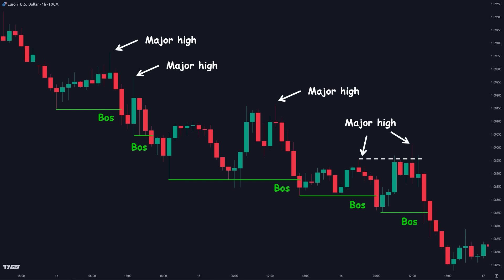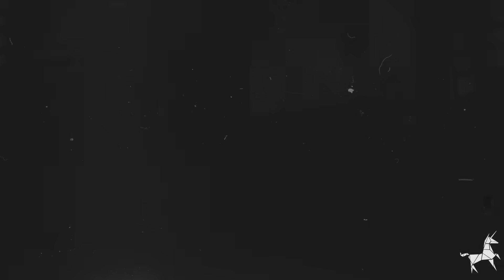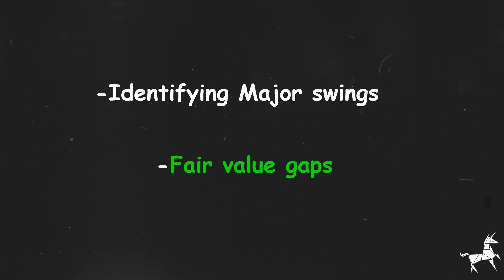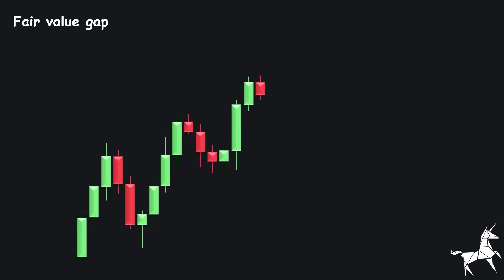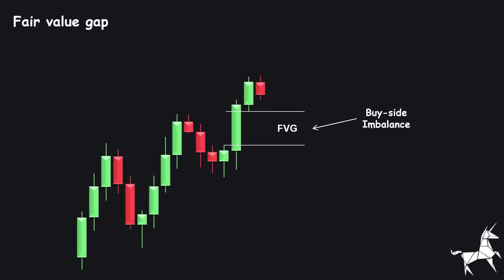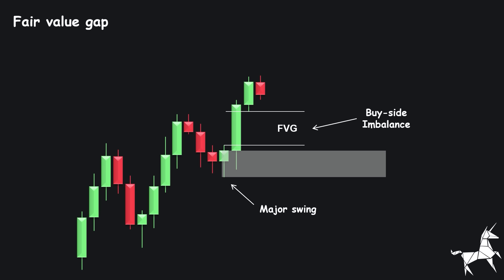This was the first criterion for identifying a major swing: the origin of a break of structure. There are two more criteria that help us identify major swings and confirm the market direction. A bullish fair value gap indicates a buy-side imbalance, where buying pressure significantly outweighs selling pressure, possibly due to institutional activities. The demand area that created this gap becomes stronger, and we expect a rejection when the price taps into this area again. From the imbalance perspective, demand areas with fair value gaps are considered major swings, while those without imbalances are regarded as minor swings.